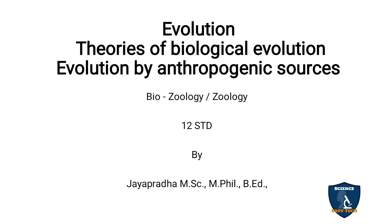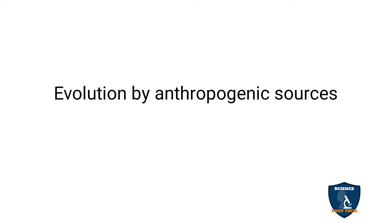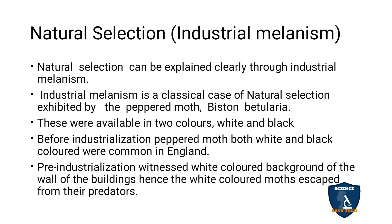We will discuss about evolution by anthropogenic sources in the theories of biological evolution. Anthropogenic means it deals with human beings. So through those sources, evolution can occur in the world. So evolution by anthropogenic sources.